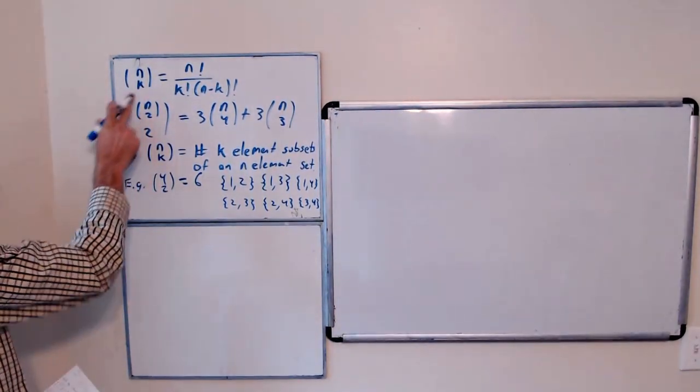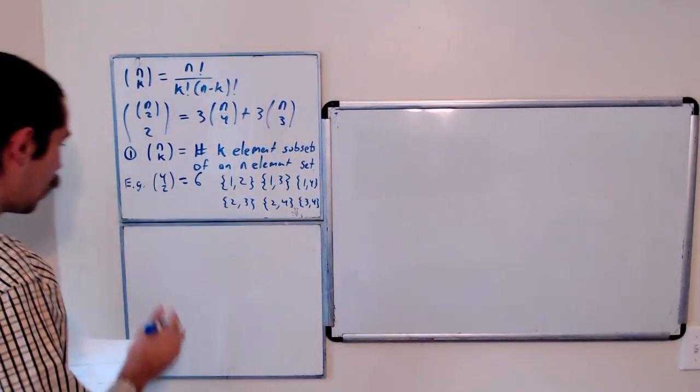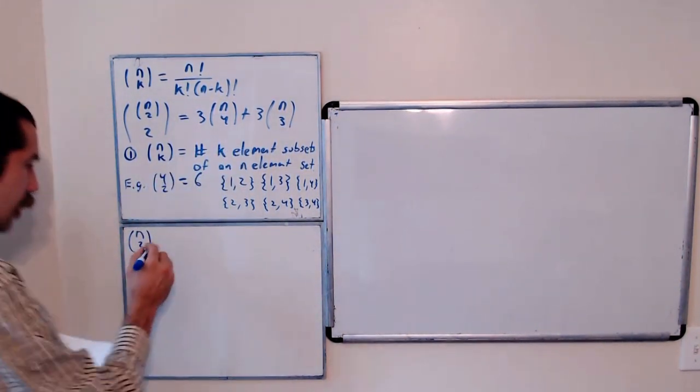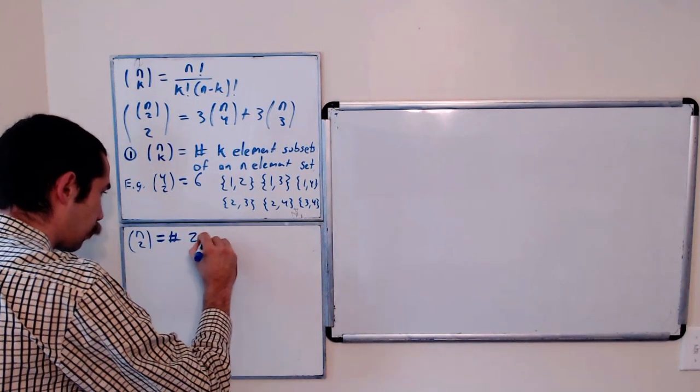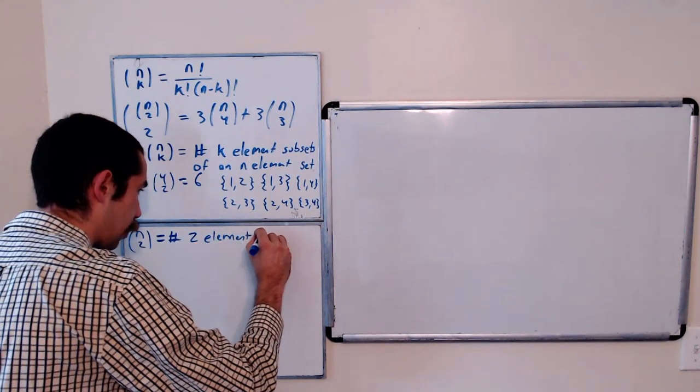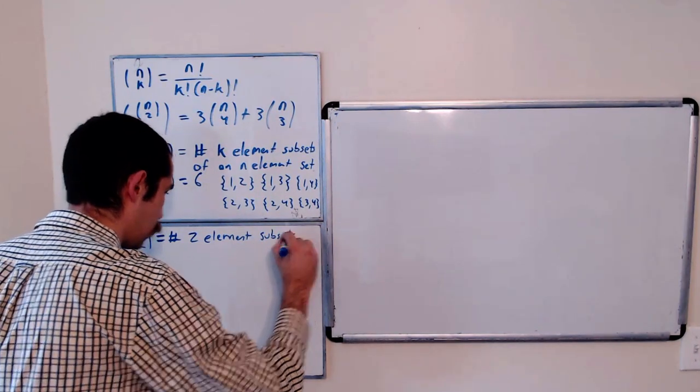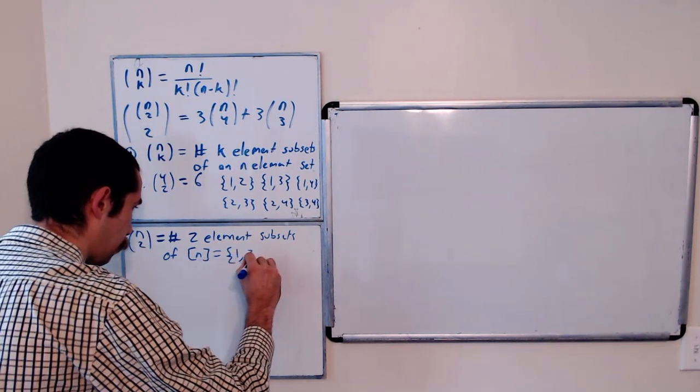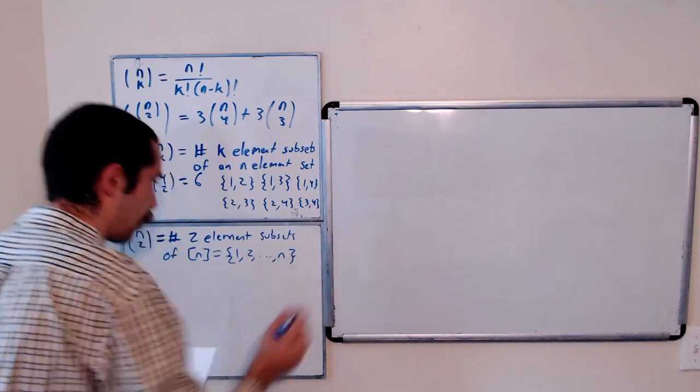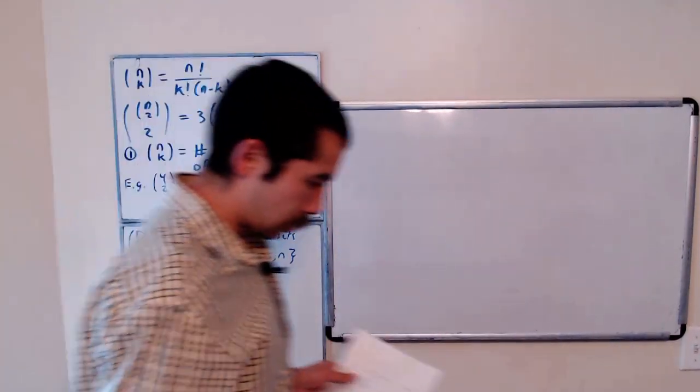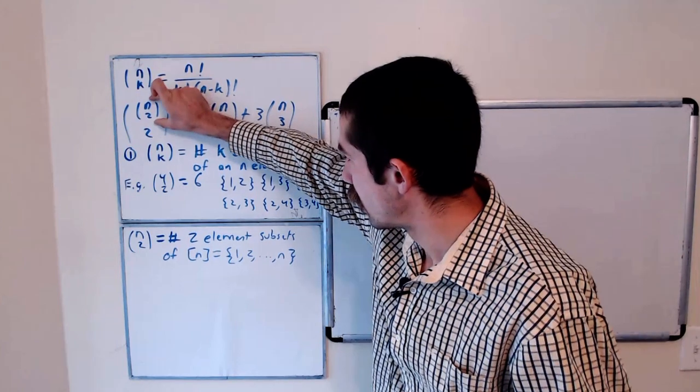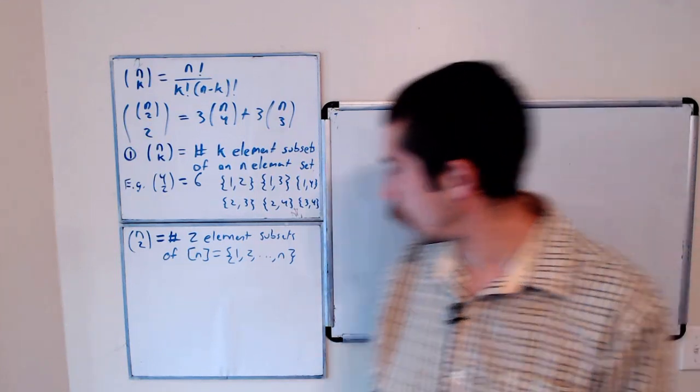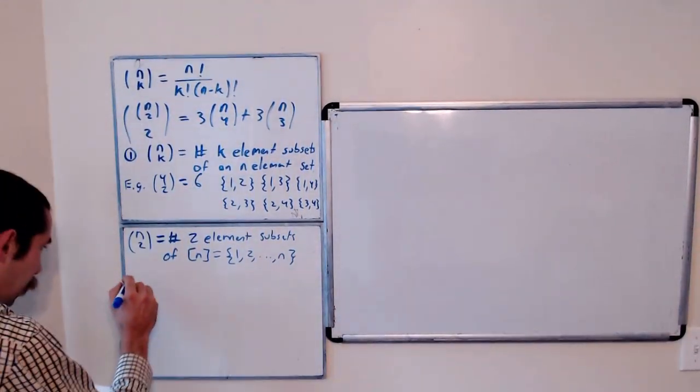So in our case, let's just look at this top part of this big binomial coefficient. n choose 2, using this fact, is the number of 2 element subsets of what we call bracket n, which is just the numbers 1 through n. So here we have, this is the number of 2 element subsets of bracket n.